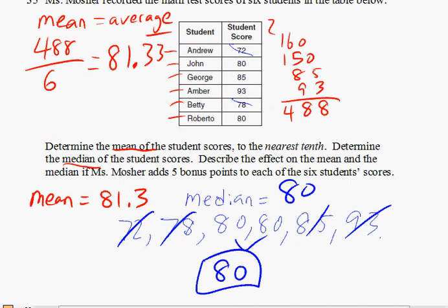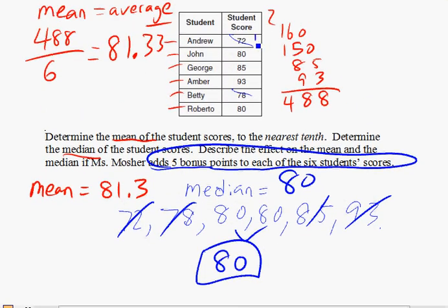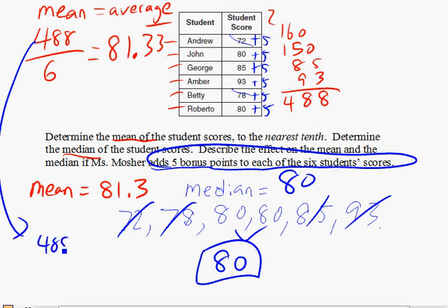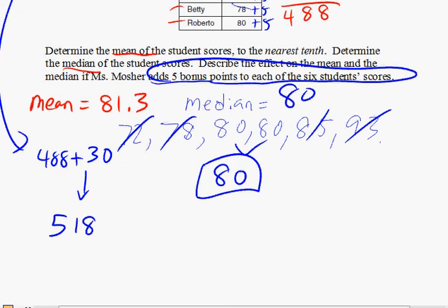Now that we have the mean and the median, let's look at the other part of the question: what happens when Ms. Mosher adds five bonus points to each of the students' grades? Each score goes up by five, so we're adding 30 more points to the previous total. 488 plus 30 gives a new total of 518. Dividing by the same 6 students, your new mean is going to be around 86.3.